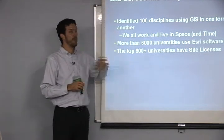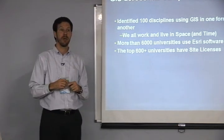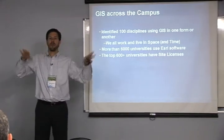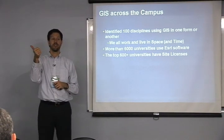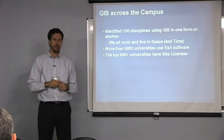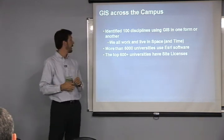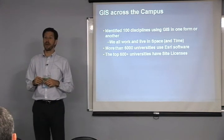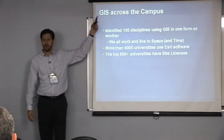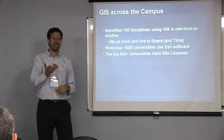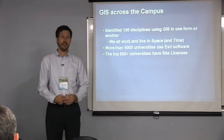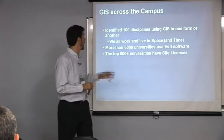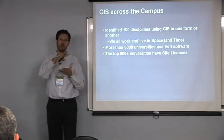The idea of GIS across the campus is happening in many places. We have identified 100 disciplines across many universities worldwide where they are either teaching with GIS or researching with GIS — many surprising disciplines. This is because everyone works and lives in space. One problem historically is the big 'G' — Geographic — leading biologists and industrial engineers to say that's not for me, that's for geographers. But everyone has problems to solve in space.